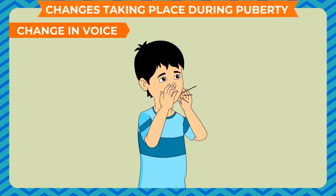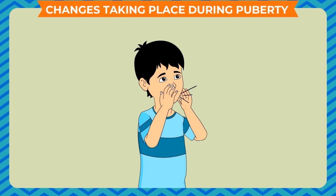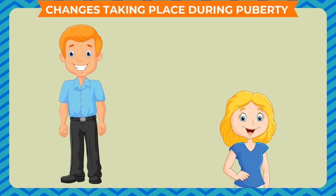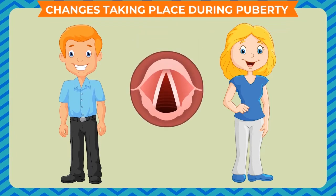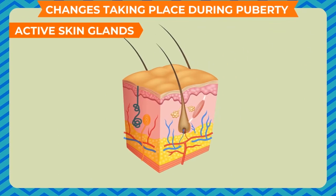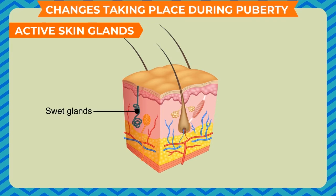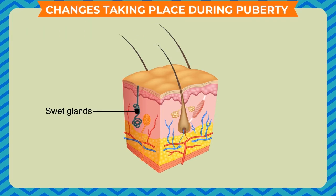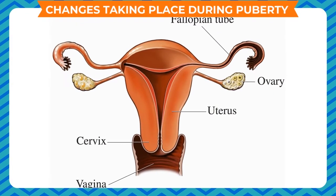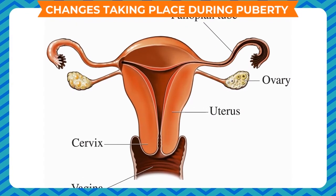Voice undergoes a considerable change during puberty. Boys tend to have a low-pitched voice while girls have a high-pitched voice. The change is more prominent in boys due to the growth in size and strengthening of the voice box. The voice box protrudes out as Adam's apple. The sweat glands as well as sebaceous glands become more active during this period, resulting in acne and underarm odour. The hormone progesterone from the ovary in females also has some role in this.